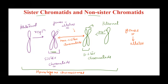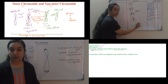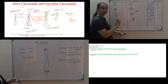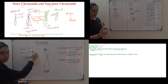Sister chromatids are just the duplicated chromosome itself. But when it comes to non-sister chromatids, we are talking about the chromatids of the homologous chromosome — the sister chromatid of the homologous pair. That's the key difference: sister chromatids are the duplicated chromosome, while non-sister chromatids are the chromatids of the homologous chromosome. I hope this video was helpful — do subscribe to the channel for new videos every week, and keep learning!